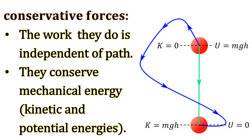In this example, a red ball moves from some height to the surface of the Earth along a blue path. The work done by the gravitational force on this ball depends only on the displacement from the ball's initial to final heights. Kinetic energies and potential energies change, but the net mechanical energy remains unchanged.